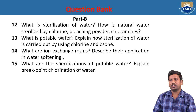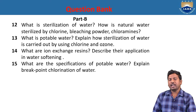What is sterilization of water? How is natural water sterilized by chlorine, bleaching powder, and chloramines? Sterilization of water is the process of removing or killing pathogenic bacteria. Because of bleaching powder (calcium oxychloride), it reacts with water to give hypochlorous acid, which acts as a disinfectant to kill pathogenic bacteria. Some chloramines produced can be removed by breakpoint chlorination.